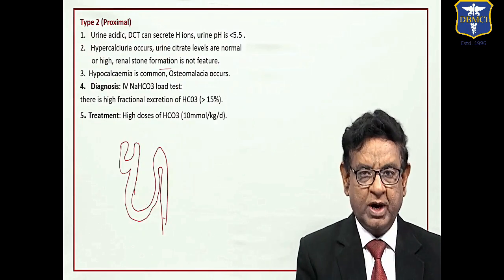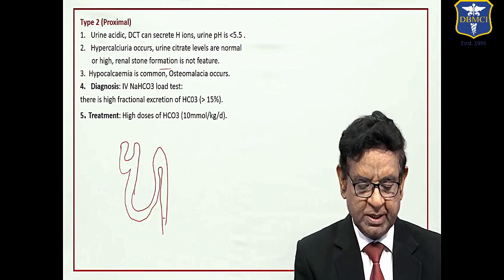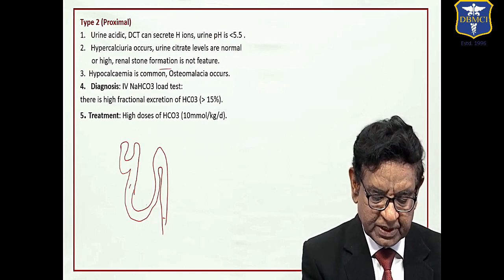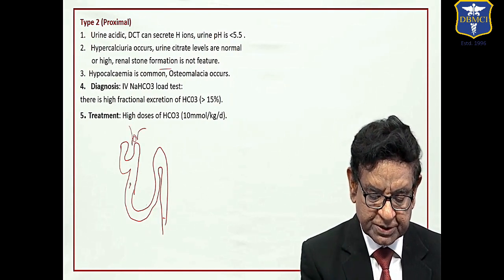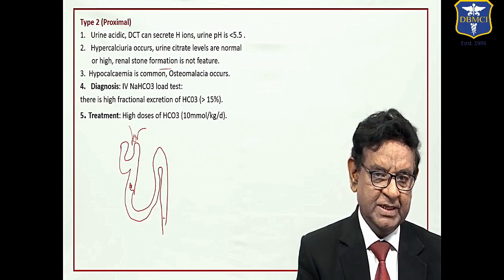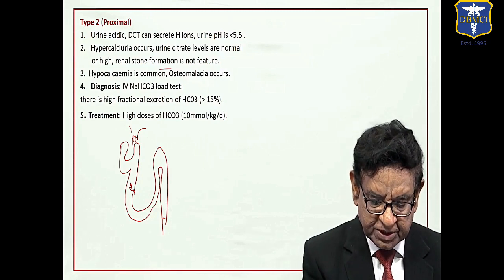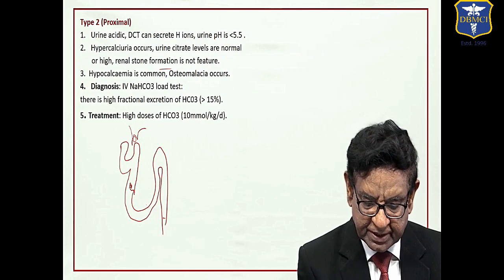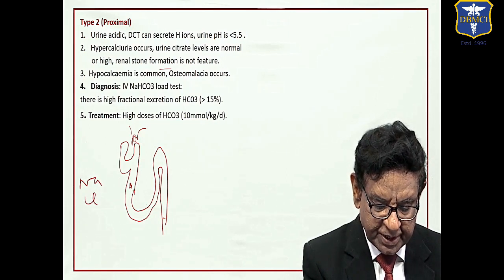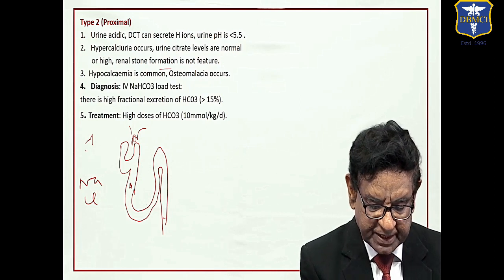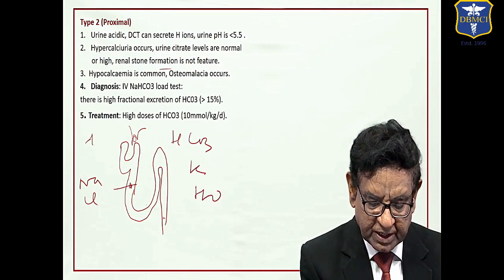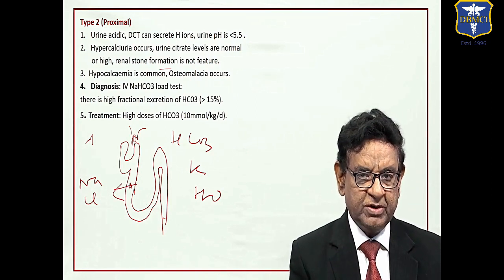Then we talk about type II RTA, also known as proximal RTA, because here the problem lies in the PCT. We all know that filtrate comes from glomerulus to the tubules. The composition of filtrate is almost same as plasma except that it does not contain protein. What is reabsorbed here? Sodium, chloride, bicarbonate, potassium, water - all these are reabsorbed at PCT.